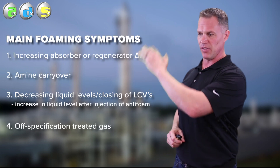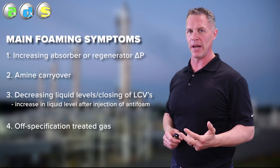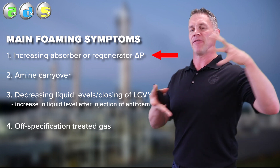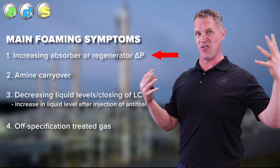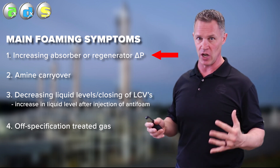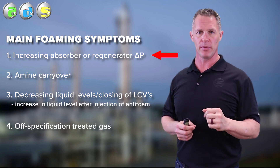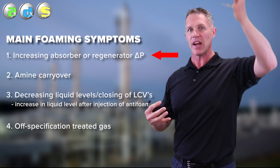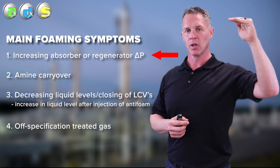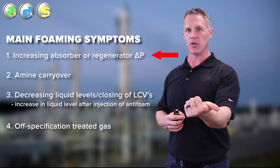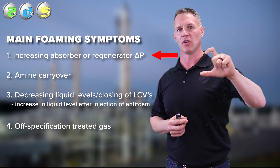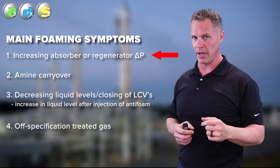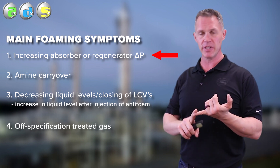There are four main symptoms of foaming. The most common one operators use is the differential pressure gauge. As differential pressure builds for no apparent reason — we haven't increased gas flow or changed anything — that normally means we have foaming. The differential pressure measures what the gas has to fight through from the bottom of the tower to the top. In a tray tower, the gas goes through each tray and through two to three inches of amine on top of the tray, repeated 15 to 20 times depending on the number of trays. So an increase in DP is a key warning sign.